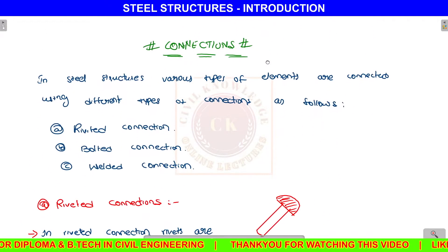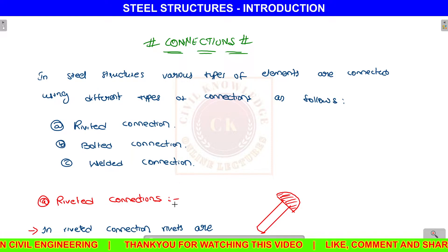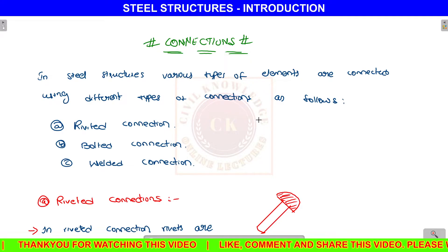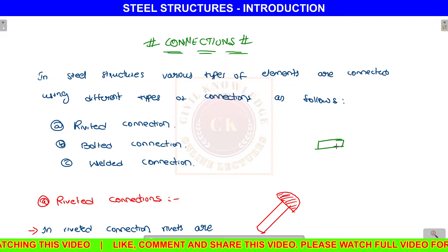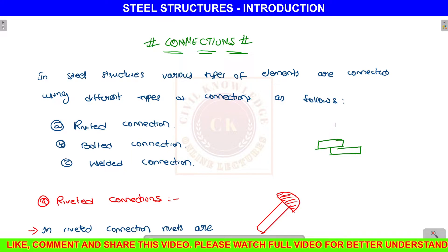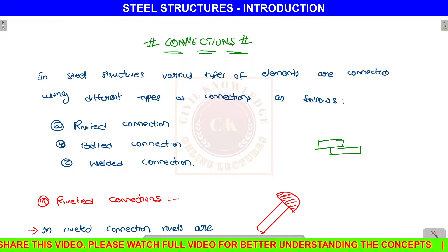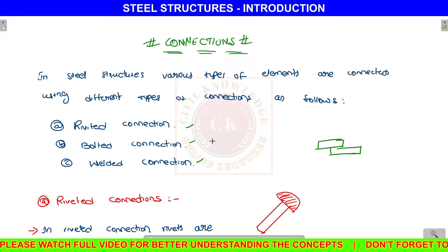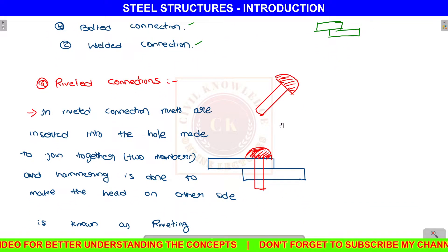Next, the major connection types. There are different types of connections. In a steel structure, when there are two plates or two members to connect, we have various types of connections available. One of the types is riveted connection.